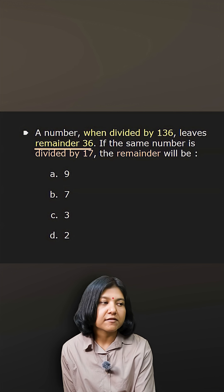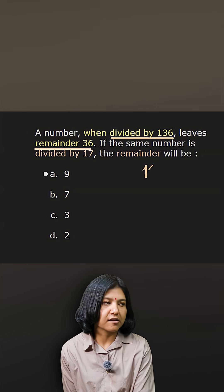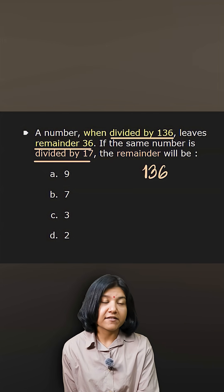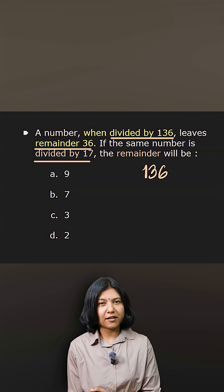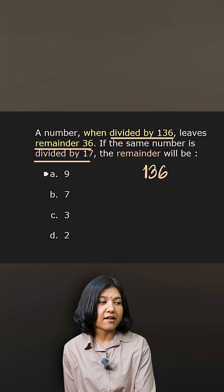Now look at the two divisors that you have. The first initial divisor was 136, now they're asking for divisibility by 17. One thing you want to confirm in such questions is the new number, the new divisor, is that a factor of the first divisor?